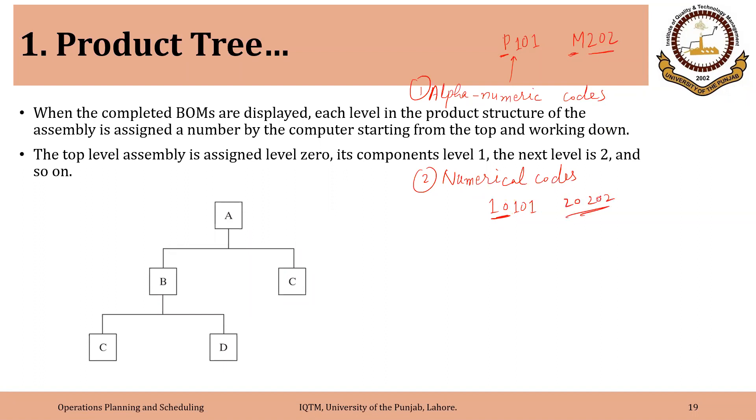So we will discuss it in more detail in the next lecture, how we assign the codes to the component. But generally the first alphabet or first couple of alphabets define the level of that product. So here we are going to discuss what is meant by the level of a product in the product structure. Generally speaking, the smaller digits show the higher level component and the larger digits show the lower level component. So this is the rule of thumb.